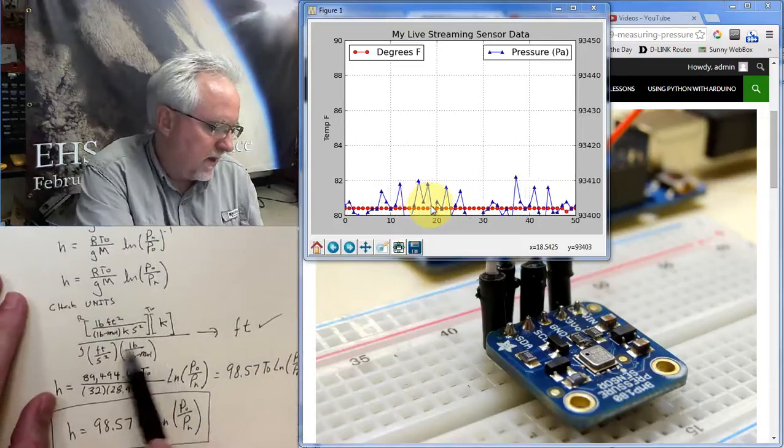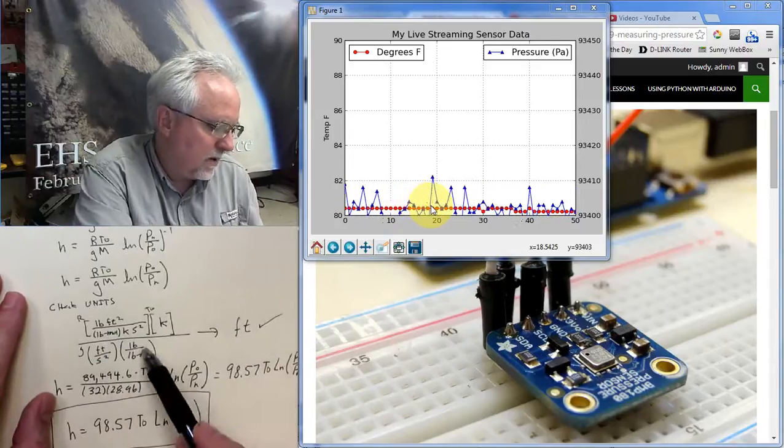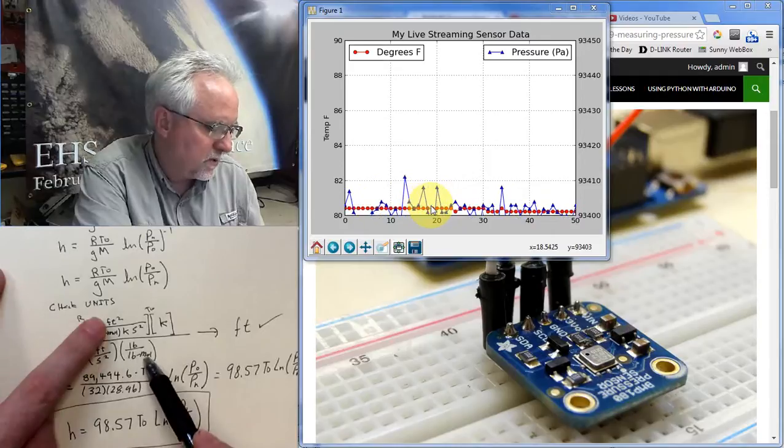Now let's look at this. The pound per pound mole, pound, pound mole will cancel pound, pound mole. So those two terms cancel. This Kelvin cancels that Kelvin.